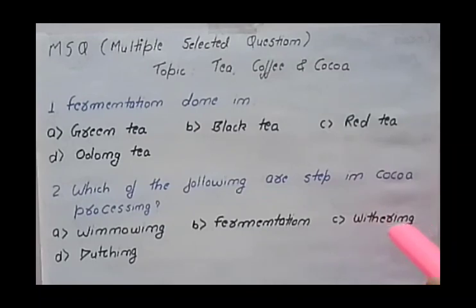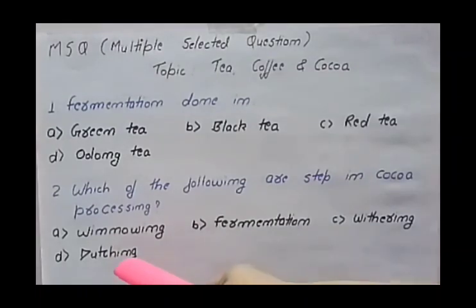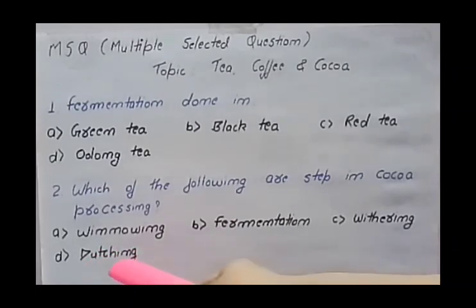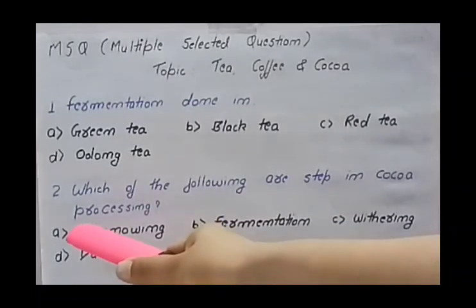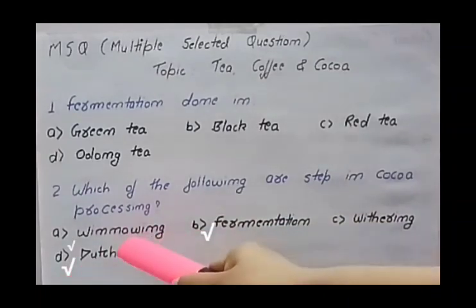Withering means to dry the tea leaves or to reduce the moisture content of the tea leaves. Fourth option is dutching — yes, it is a process of cocoa processing. Dutching means when acid is neutralized by alkali in cocoa processing; this process is known as the Dutch process. So the right answers are winnowing, fermentation, and dutching.